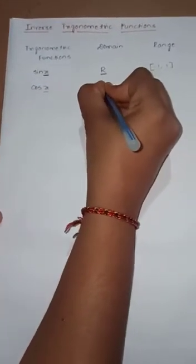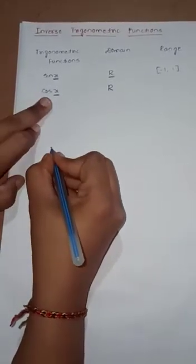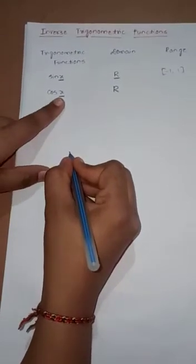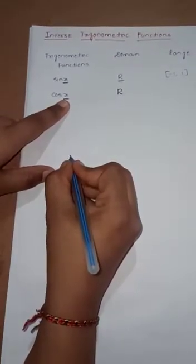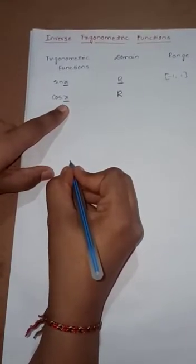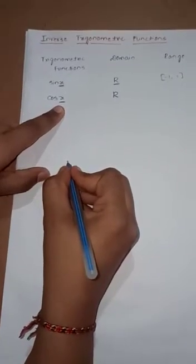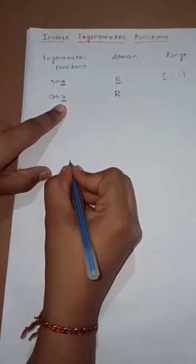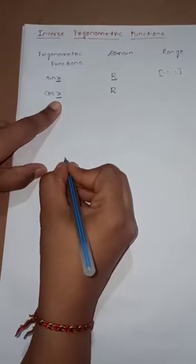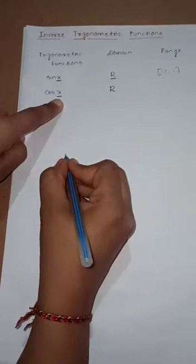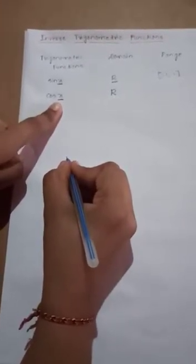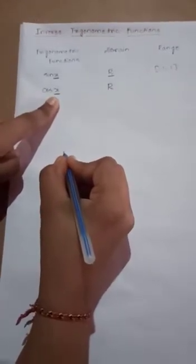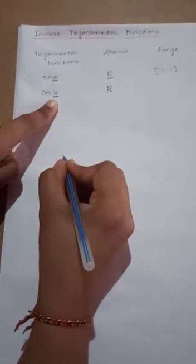For cos x, the domain is also the set of all real numbers. Substituting values: cos 0° = 1, cos 30° = √3/2, cos 45° = 1/√2, cos 60° = 1/2, cos 90° = 0, cos 180° = −1, cos 270° = 0, cos 360° = 1. Since cos(−θ) = +cos θ, cos(−90°) = cos 90° = 0. The maximum value of cos is 1 and minimum is −1, so the range is also the closed interval [−1, +1].